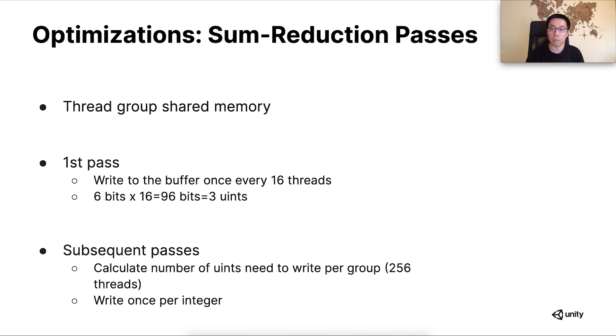For subsequent sum reduction passes, we employed a similar optimization. First, calculate the number of integers we need to write every 256 threads, which is our group size of choice. Then after all the threads have written to their allocated slots in the shared memory array, we again combine the values into 32-bit integers, and use the first few threads to write 1 integer per thread to the buffer. Notice that we only cache the memory writes to eliminate the write conflicts and atomic operations. It's not beneficial to cache the buffer reads according to our profiling results, even though there are many redundant reads. We think the L1 and L2 cache is working well for this type of access pattern.